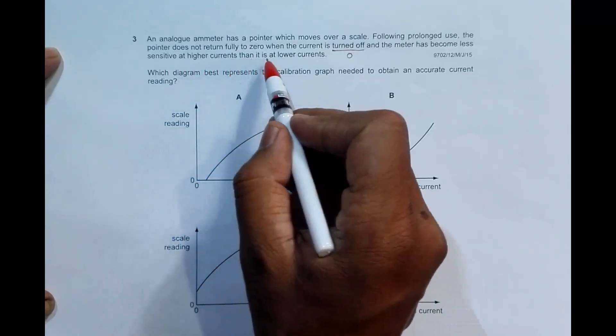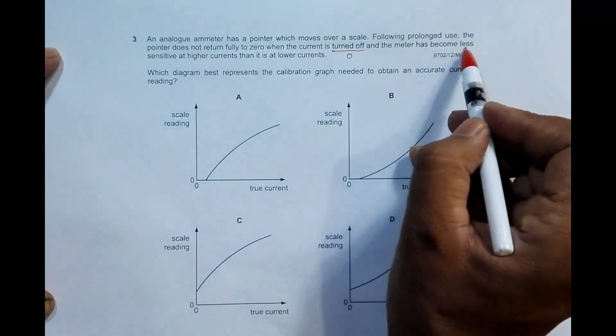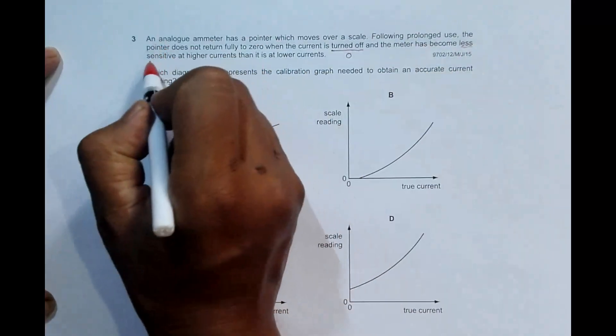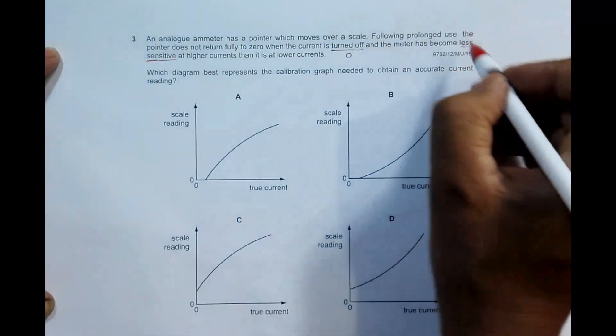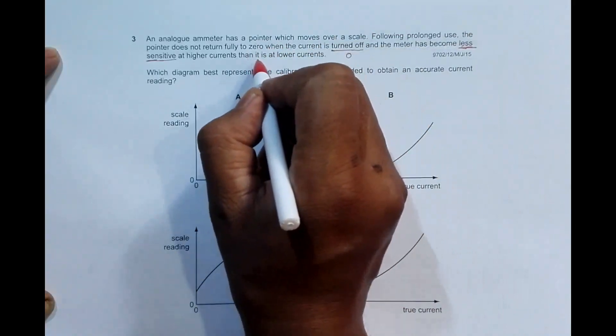At high current it is less sensitive - less change in the reading. At lower currents it is highly sensitive, that means more variations in the reading.